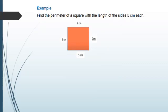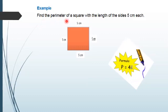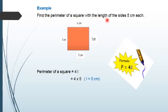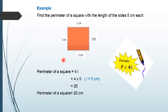Now let's solve an example. We have to find the parameter of a square with the length of the side 5 cm each. We know the formula of the parameter is 4n, so we will apply the formula: it will be equal to 4 into 5, as we have a length of 5 cm. And that will be equal to 20. So the parameter of a square with the length 5 cm is equal to 20 cm.